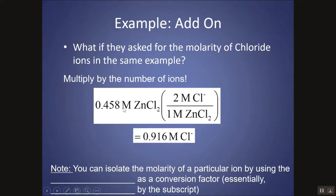So in 1 ZnCl2, there are two chloride ions because it has a subscript of two. So I would just multiply my molarity by two, and I'd have double the amount of chloride ions. So you can isolate the molarity of a particular ion by using the subscript as a conversion factor, as I showed here, like with dimensional analysis, or essentially just multiplying by the subscript.